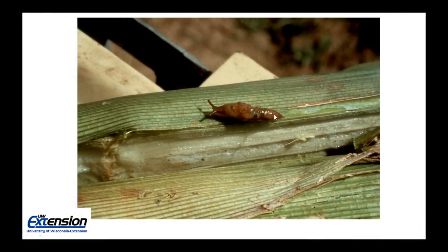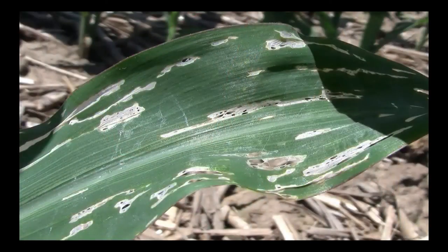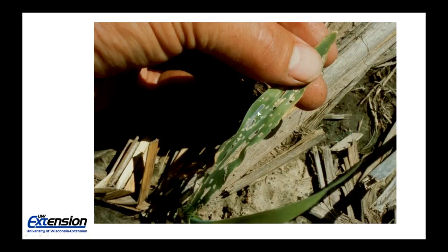Here's a picture of what a slug looks like — essentially, they're a snail without a shell. We do have a few different species of slugs in Wisconsin. Their feeding symptoms are very diagnostic — usually you'll see elongated feeding scars. This scar right here is a really good example of what we call window paning. Some of the other scars show where the slug may have fed completely through the cuticle, or the cuticle has weathered out.